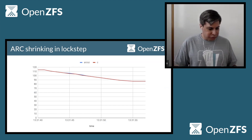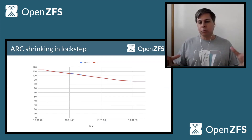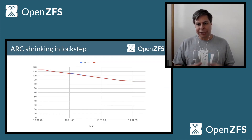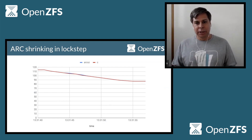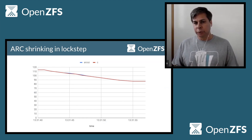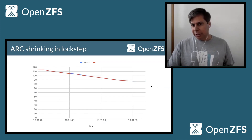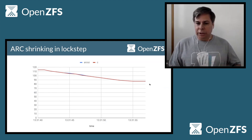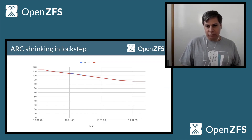Our simple test was: run the same workload, fill the ARC, then add some memory pressure. We now see that arc_size and arc_c are able to stay in lockstep. In this case we were doing 30 gigs worth of memory pressure. We saw the ARC actually slowly come down, reduce itself by 30 gigs, give that memory to somebody else to consume, and we're able to drive through without any long delays.